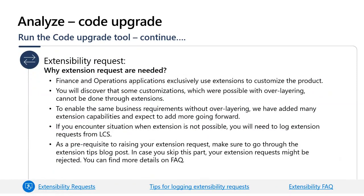Regarding extensibility requests: in Finance and Operations, overlayering is no longer allowed — extensions are the only way to customize the product. Some overlay customizations are not possible through extensions anymore. If you have a genuine business requirement that cannot be achieved via extensions, we have already added many extension capabilities and are adding more. If you are missing a valid extension point, you can raise an extension request through LCS. Before doing so, make sure you review the extension steps blog post, which discusses what is deemed a good and allowed extension and what will be automatically rejected.